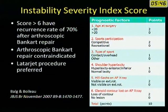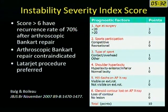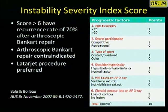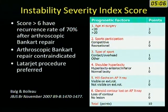Not every recurrent anterior shoulder dislocation needs a Bankart repair. To select surgery, you look at six factors: age, sports participation, type of sports, shoulder hyperlaxity, Hill-Sachs lesion on AP view, and glenoid contour loss on AP view. You give a score to each parameter to calculate the Instability Severity Index Score. If the score is less than 6, you can safely do a Bankart repair. If the score is more than 6, a Bankart repair has a high chance of failure and the recommended procedure is the Latarjet procedure.